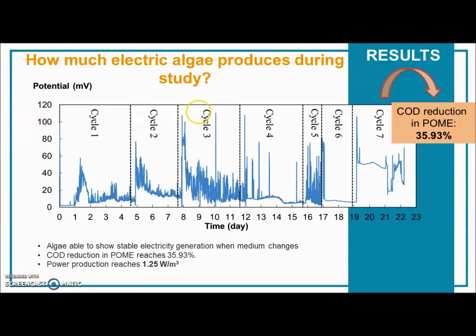How much electricity does algae produce in this study? As you can see, we have a graph of potential or voltage against time. To explain it in simpler terms, I divided it into a few cycles. For each cycle, I replace the media on the anode side, because once algae has used up that media it needs to be replaced. From this graph we can conclude that algae is able to show stable electricity generation when the medium changes, or each time a new cycle begins.